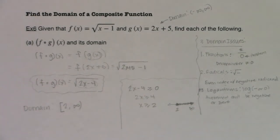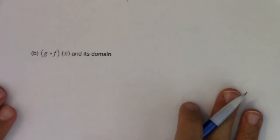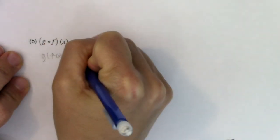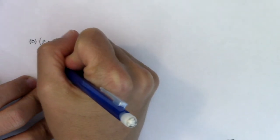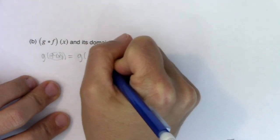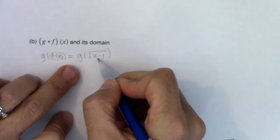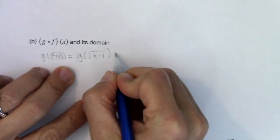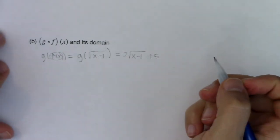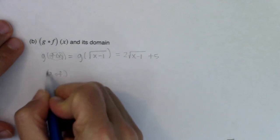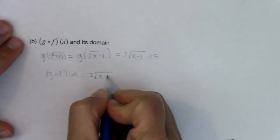So let's compose these functions in the other direction — let's do g of f of x. I'm going to start with my innermost function: f of x was the square root of x minus 1. I need to plug the square root of x minus 1 into g, and g was 2x plus 5. So this becomes 2 times the square root of x minus 1, plus 5. Therefore, g of f of x equals 2 times the square root of x minus 1, plus 5.